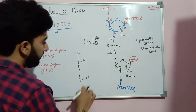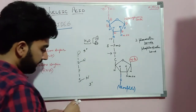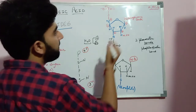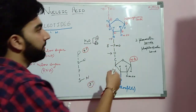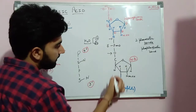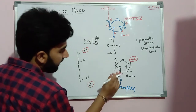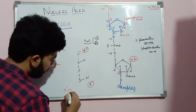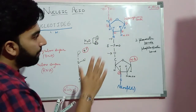This chain moves from 5 prime to 3 prime. The 5 prime means the 5th carbon — the formation of the polynucleotide starts from the 5th carbon and ends at the 3 prime position. So the formation of a polynucleotide always takes place in the 5 prime to 3 prime direction. This is the structure of a polynucleotide — I hope it is clear to all of you.